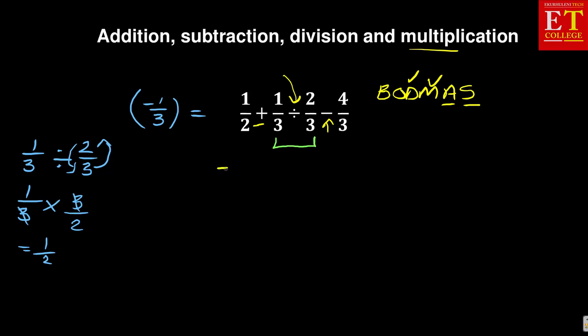If we look at this problem now, equal to 1 over 2 plus 1 over 3, you introduce a times, then you invert it, 3 over 2 minus 4 over 3. This is same as 1 over 2 plus, because whenever you're multiplying you can cancel diagonally. So you have 1 over 2 minus 4 over 3.